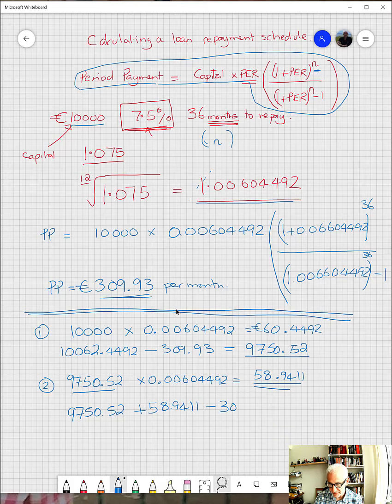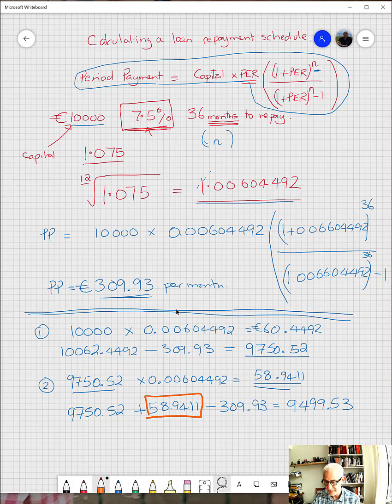And that means that at the end of period two, the new balance is 9499.53. Total interest paid out so far: the 58.9411 there and the 60.4492 up there.